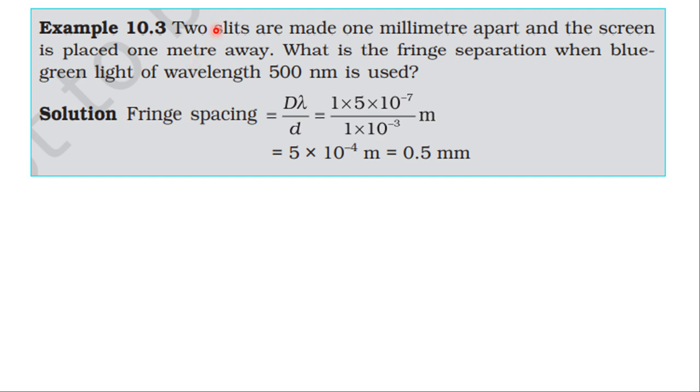Example 10.3: Two slits are made one millimeter apart and the screen is placed one meter away. What is the fringe separation when blue-green light of wavelength 500 nanometer is used?